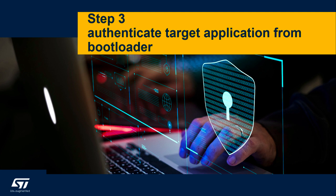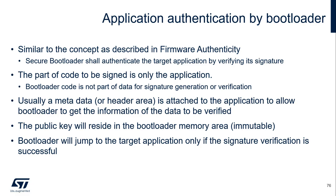The third step to achieve a secure bootloader is to add the authentication of the target application. Inside the bootloader, similar to the concept described in the former authenticity section, the secure bootloader shall also authenticate the target application by verifying its signature. The part of code to be signed is only the application — bootloader code is not part of the data for signature generation or verification. Usually a metadata or header area is attached to the application to allow the bootloader to get the necessary information of the data to be verified.